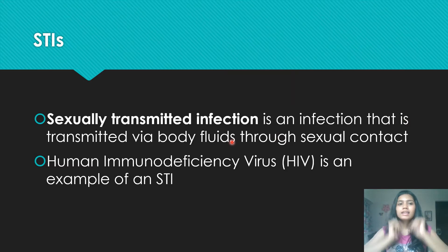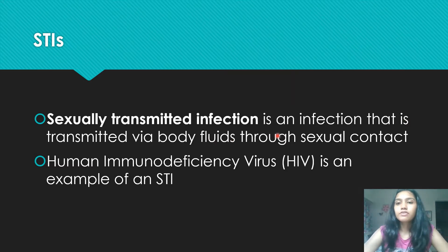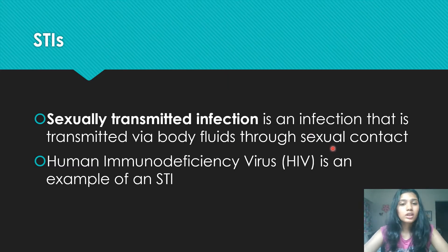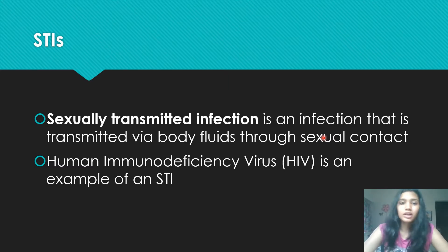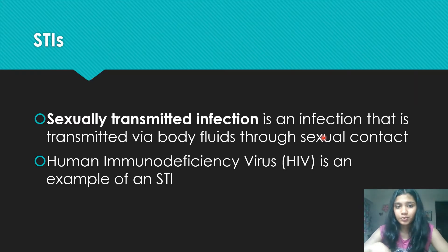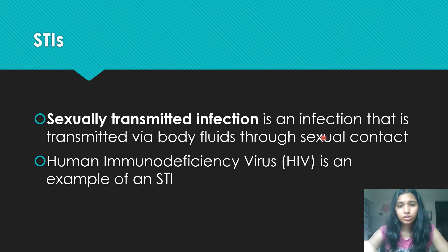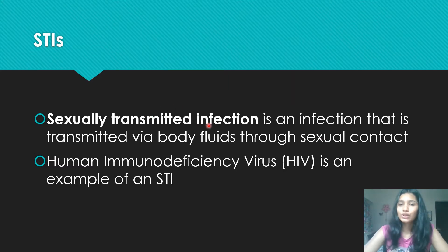So, what exactly is an STI? An STI is a sexually transmitted infection. It is an infection that is transmitted via body fluids through sexual contact. This is usually a one mark question; if you're lucky, you get it for two marks. I didn't really make any terms bold because you just need to know the whole definition by heart. This is alternatively also called a sexually transmitted disease, STD, and that is a more commonly used term. But for IGCSE, your syllabus requires you to use STI.